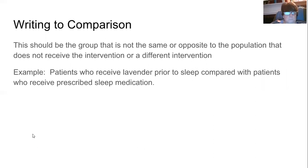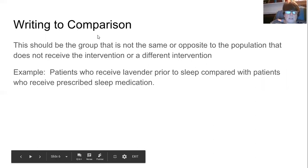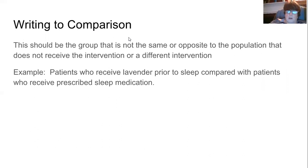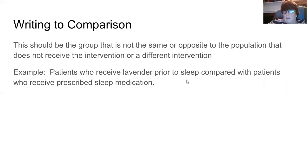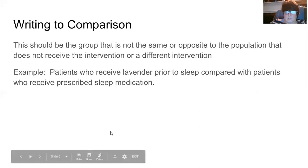For the comparison — the C part of the PICO question — it should really be the opposite group. You're comparing a group that does have an intervention with a group that doesn't. In this example: patients who receive lavender prior to sleep compared with patients who received prescribed sleep medication. The question is: is there a difference between those two particular groups?